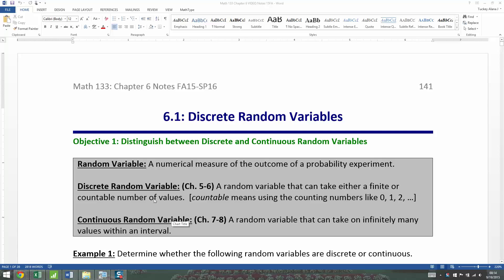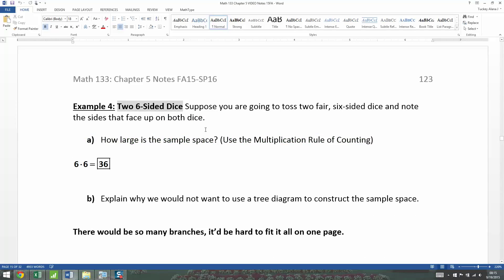A random variable is any numerical measure of the outcome of a probability experiment. Let me go back real quickly to a couple of our probability experiments in Chapter 5. Looking here at this problem, this was in Section 5.2, as a matter of fact, where we looked at two six-sided dice that you're rolling.